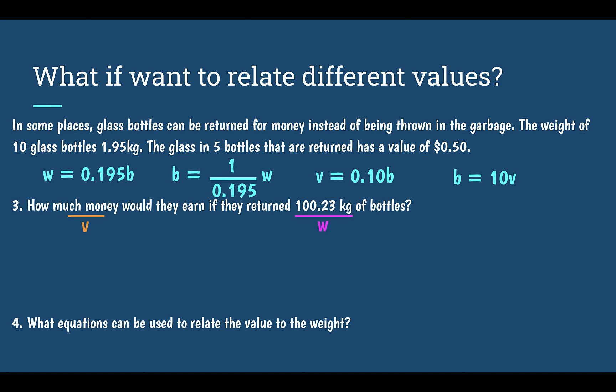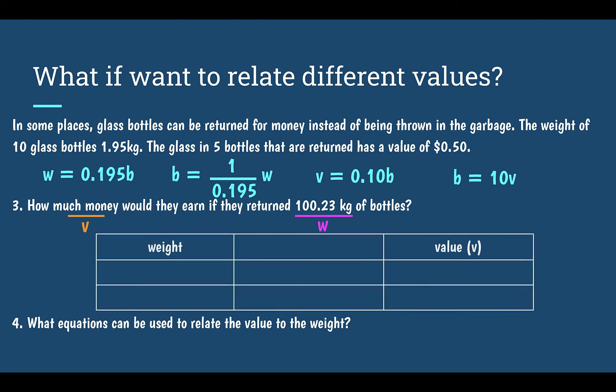100.23 kilograms is talking about weight. But if you look at our four equations, there is not an equation that relates the weight and the value. Instead, we need to go between by using the number of bottles.